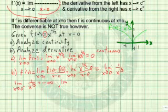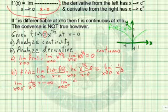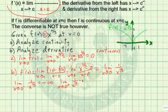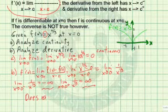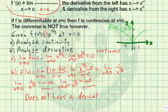Let's analyze this limit from the right-hand side. Considering positive values of x very close to zero, we have one over a very, very small positive number, so we get positive infinity. Because the limits from the two sides are not the same, this function does not have a derivative at x equals zero.